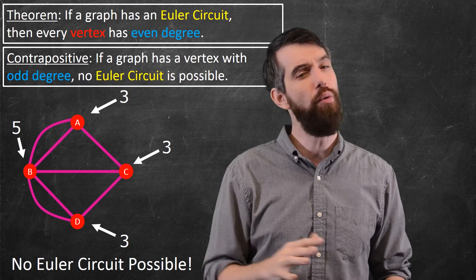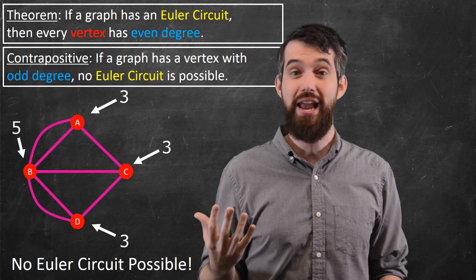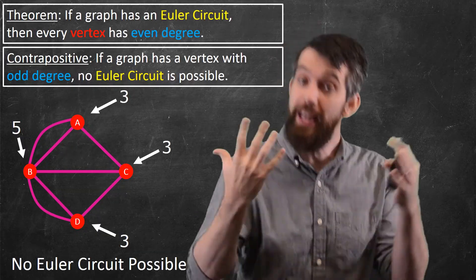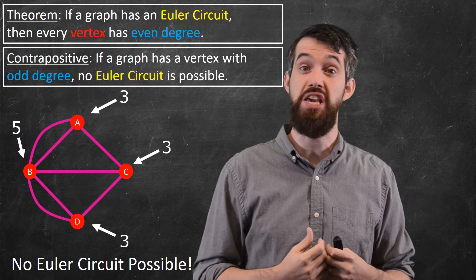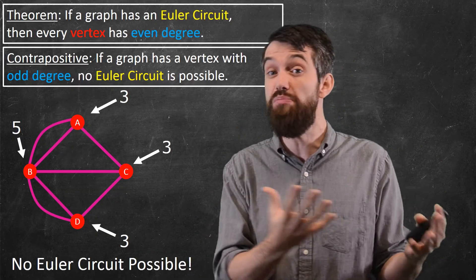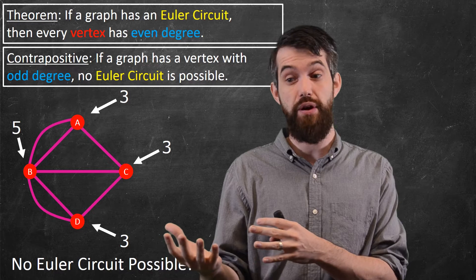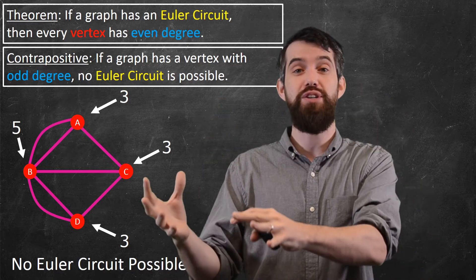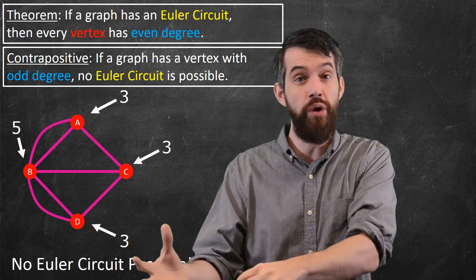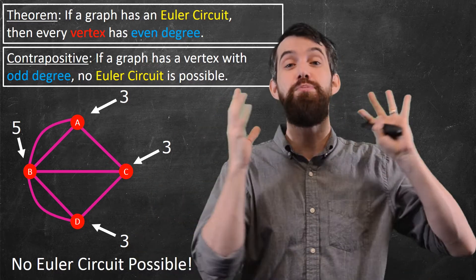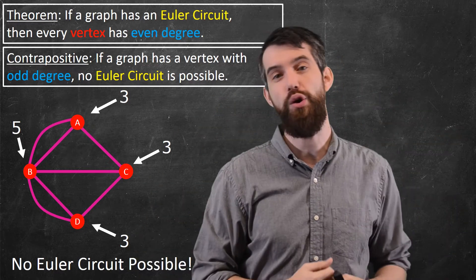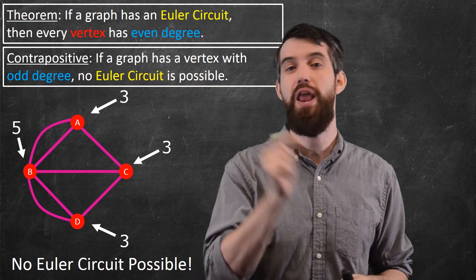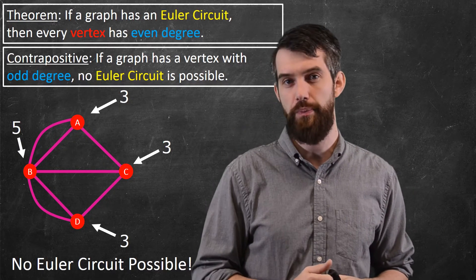By the way, the converse of this theorem is also true — it's actually an if-and-only-if theorem. That is, if you have a graph where every vertex has even degree, then it is possible to find an Euler circuit, although that argument is a little more sophisticated than what I'll cover in this video.